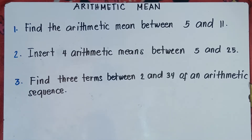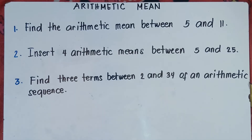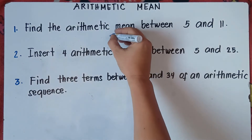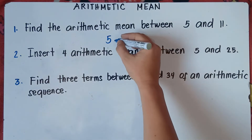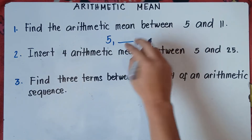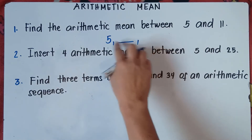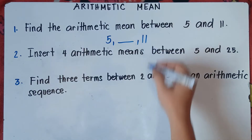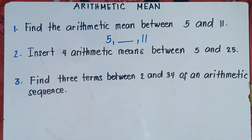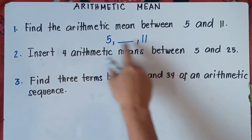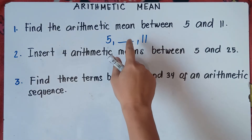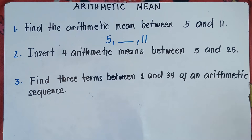So number one, find the arithmetic mean between 5 and 11. We will write number 5 and we are looking for the middle number between 5 and 11. If you have this given question, simply add the numbers — 5 plus 11 — and then divide it by 2 since we're looking for the mean.